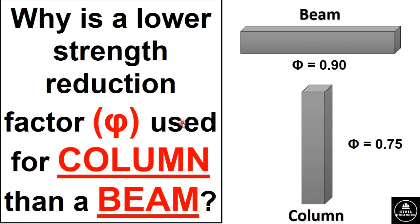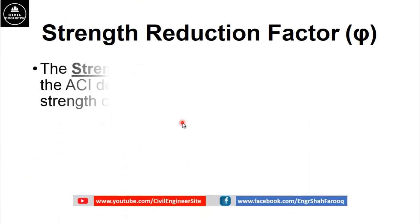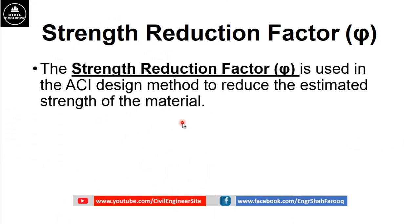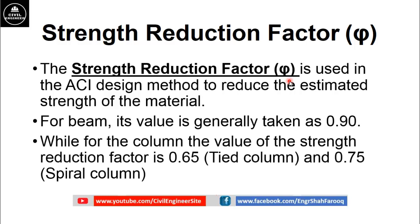Let's start today's discussion. First we will discuss what is the strength reduction factor. The strength reduction factor φ is used in the ACI design method to reduce the estimated strength of the material. This strength reduction factor φ and load factors are used in the ACI design method in order to include a factor of safety in the design of material.